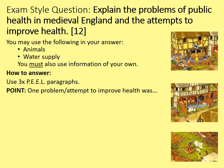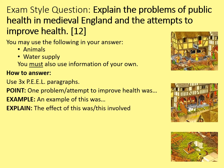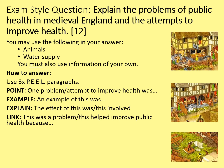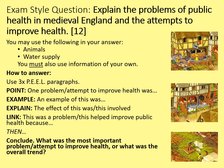Firstly make your point: 'One problem or one attempt to improve public health was...' Then give an example — and that's where you need to be really specific and detailed with your knowledge — 'An example of this was...' and 'The effect of this was...' You then link your explanation back to the question: 'This was a problem' or 'this helped improve public health because...' Once you've done three examples you should have covered animals, water supply, and at least one example from your own knowledge. Then conclude with a short paragraph on what was the most important problem or attempt to improve public health, or the overall trend.